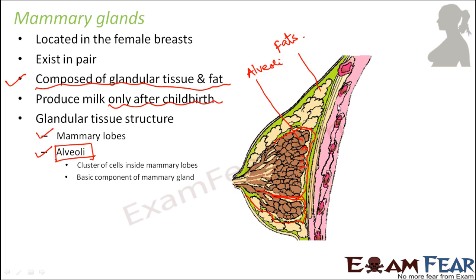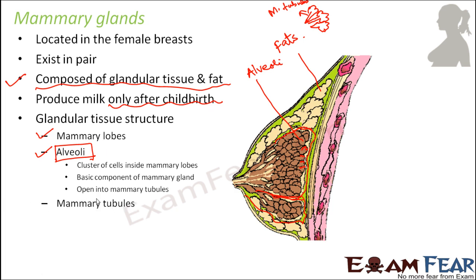These numerous alveoli all join together to form duct-like structures called mammary tubules. So the alveoli open into small tube-like structures — these are the mammary tubules. Then many mammary tubules join together to form a mammary duct.